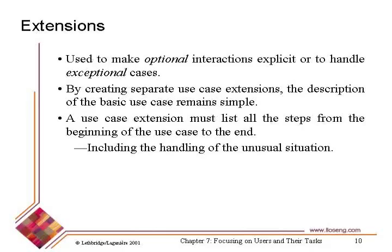There are a few add-ons we can do in use case diagrams. The first is called an extension. Extensions show optional interactions to handle exceptional cases. When things go wrong, these can be represented as extensions, showing particular paths the user takes when things go wrong.